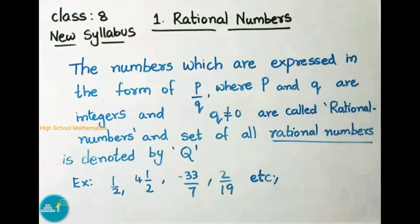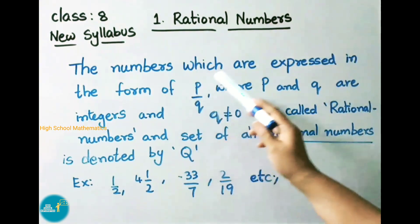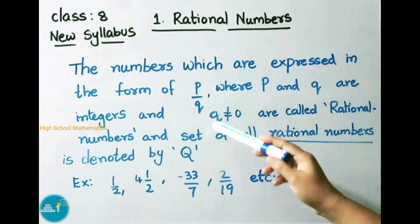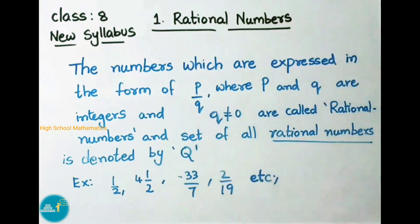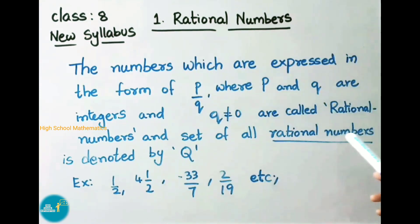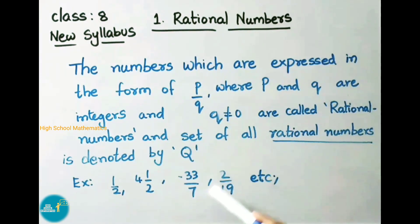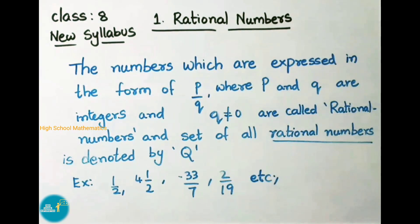Now let us see the definition of rational numbers. The numbers which are expressed in the form of p by q, where p and q are integers and q is not equal to 0, are called rational numbers. The set of all rational numbers is denoted by capital letter Q. Examples of rational numbers are 1 by 2, minus 33 by 7, 2 by 19, etc. A mixed fraction like 4 and 1 by 2 can also be written as an improper fraction, so it is also a rational number.